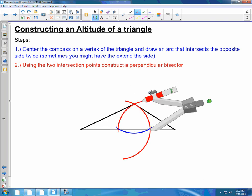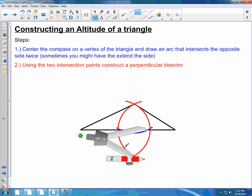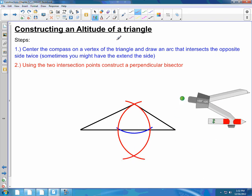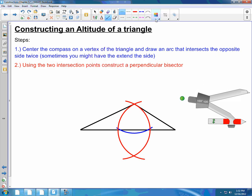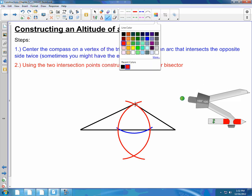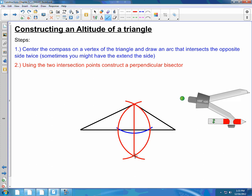Now I'm going to take a ruler and connect those two intersection points of my two arcs. Now you should clean up the picture as best as you can. I'm going to get rid of these arcs.